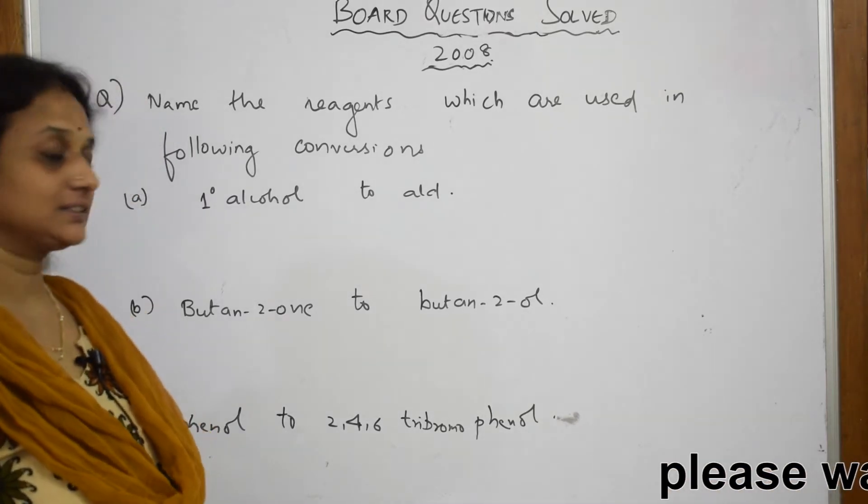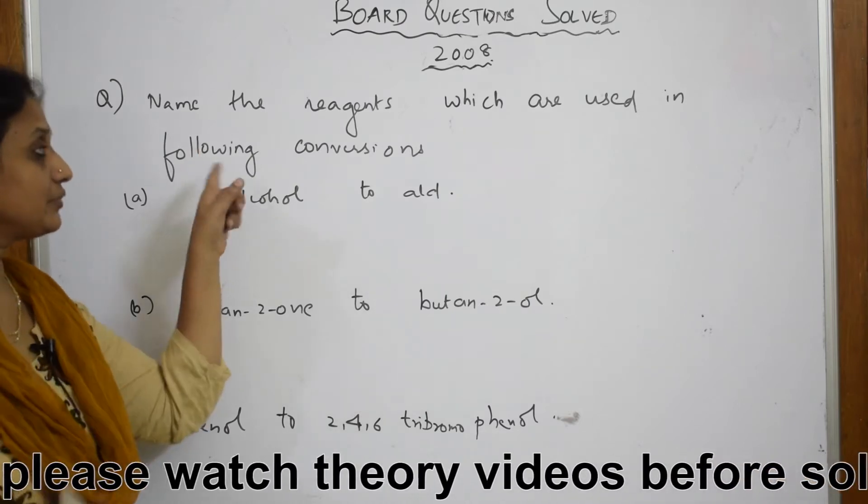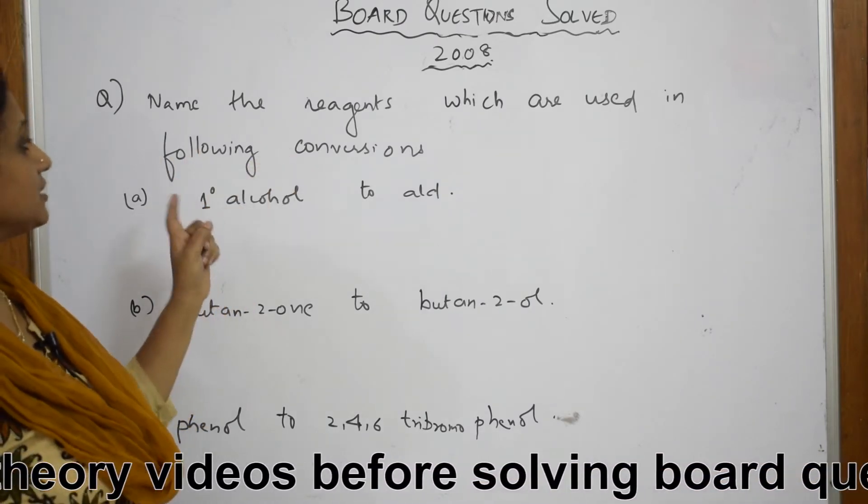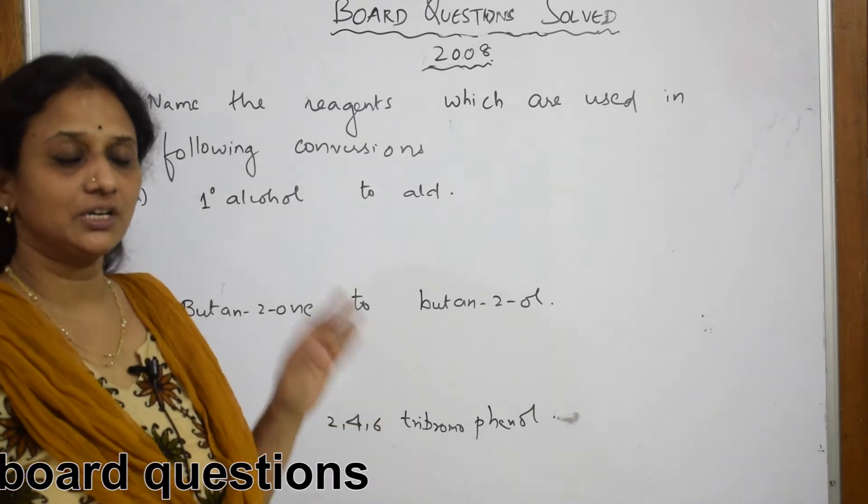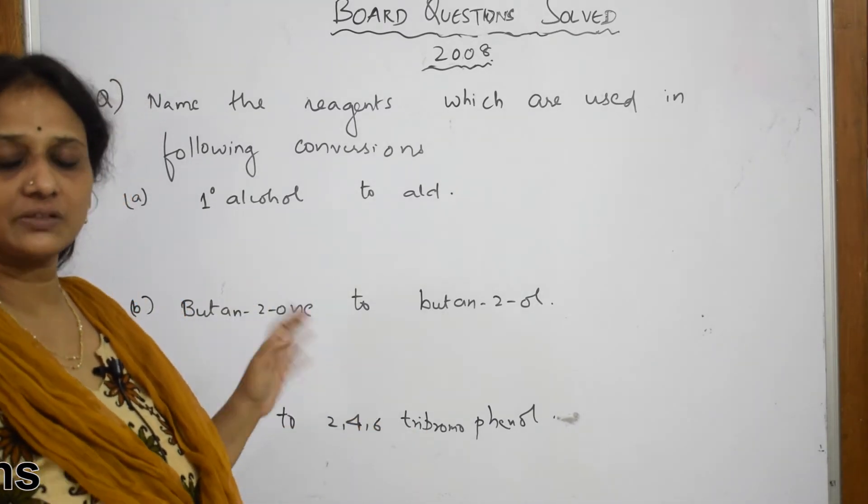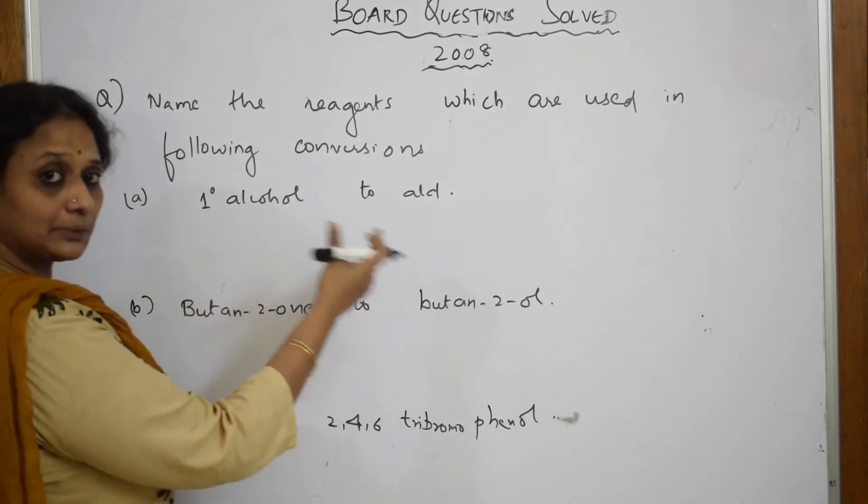Let us come back and see a 2008 board paper. They've given us: name the reagents which are used in the following conversions. I have to just basically write the reagents, nothing to show with the mechanism, but better you write the reactant and the product and write the reagent above.